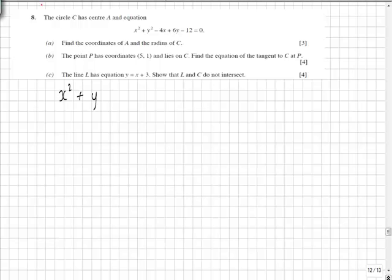x squared plus y squared minus 2ax minus 2by plus c equals 0, where a and b is the center of the circle. But also we have a squared plus b squared minus r squared equals c, where r is the radius.